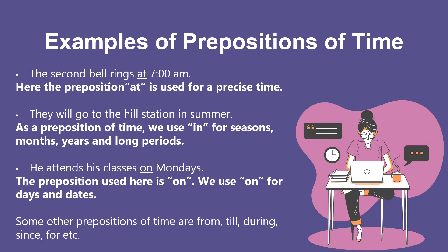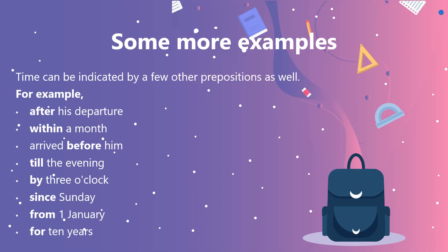He attends his class on Mondays. The preposition used here is 'on'. We use 'on' for days and dates. Some other prepositions of time are: from, till, during, since, for, etc. Time can also be indicated by other prepositions. For example: after his departure, within a month, arrived from, before him, till the evening, by 3 o'clock, since Sunday, from 1st January, for 10 years.